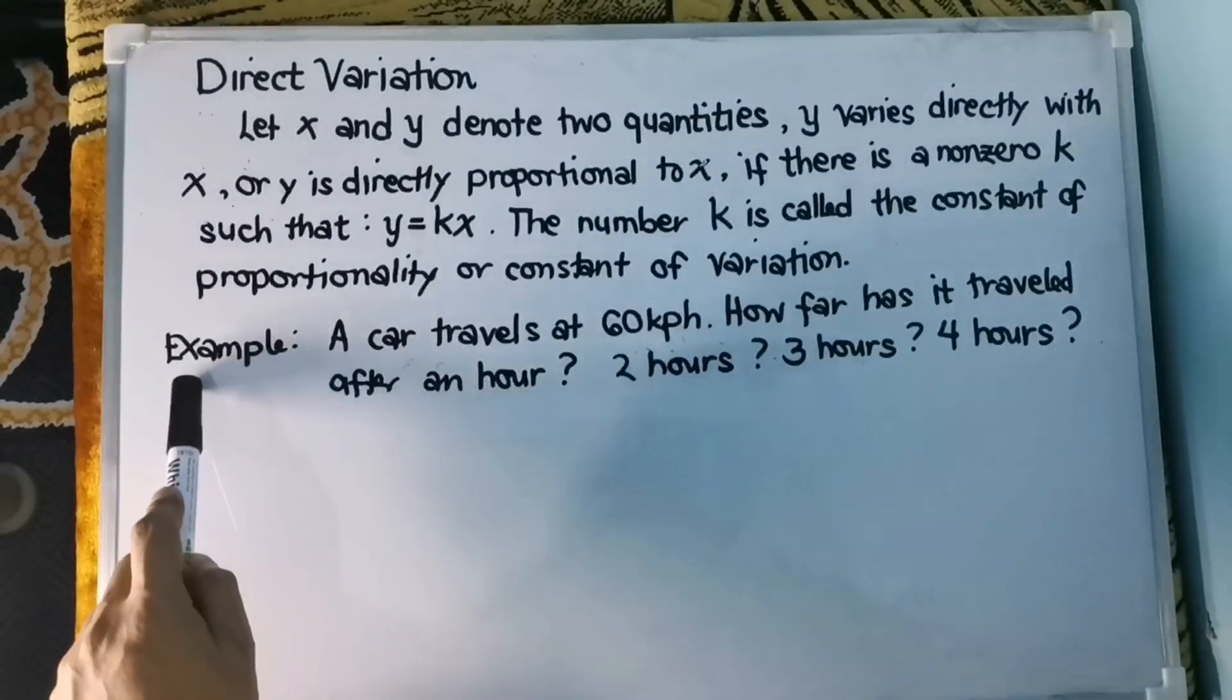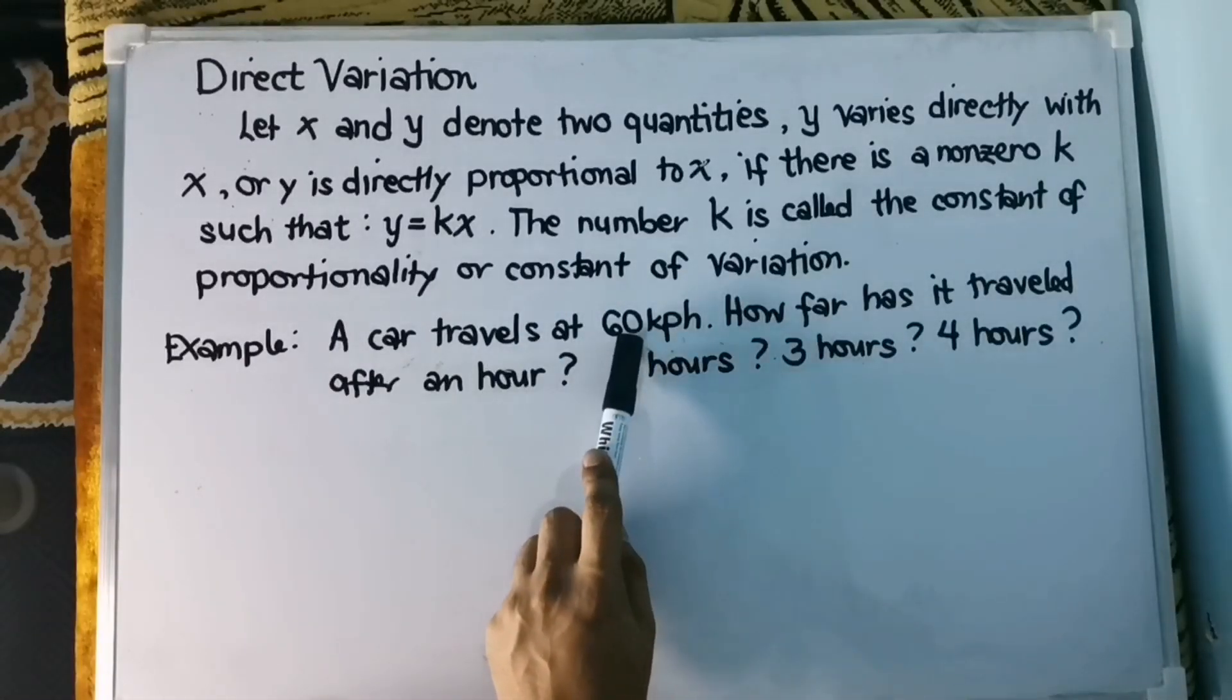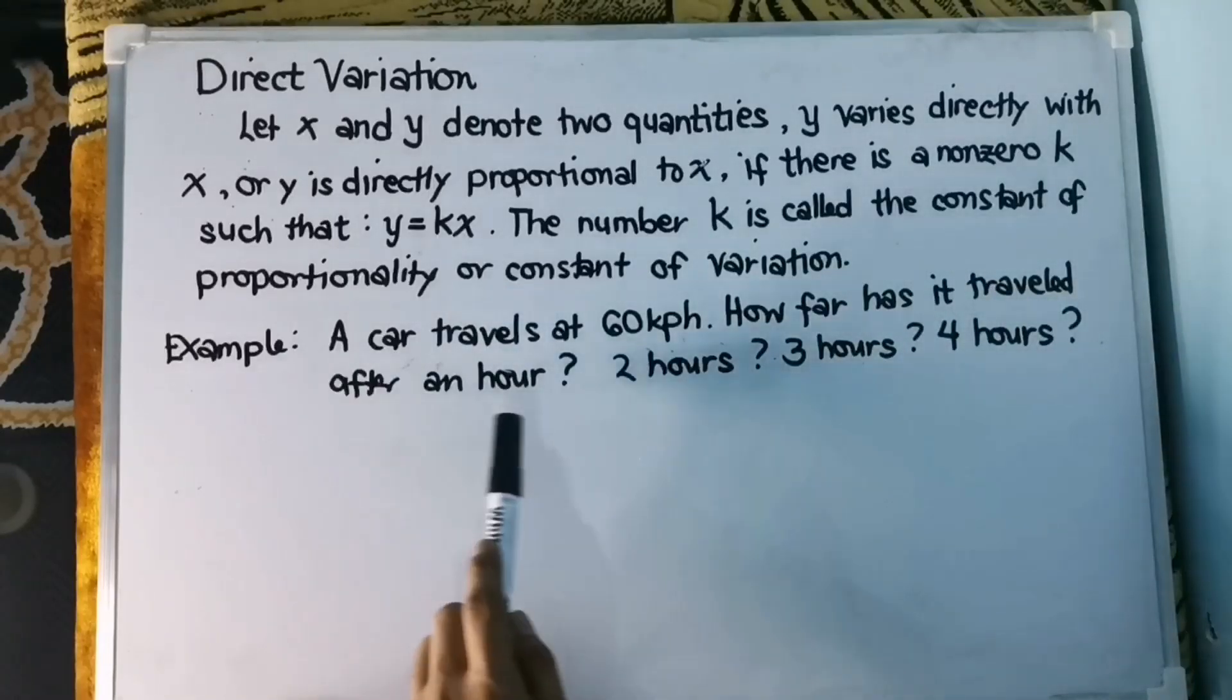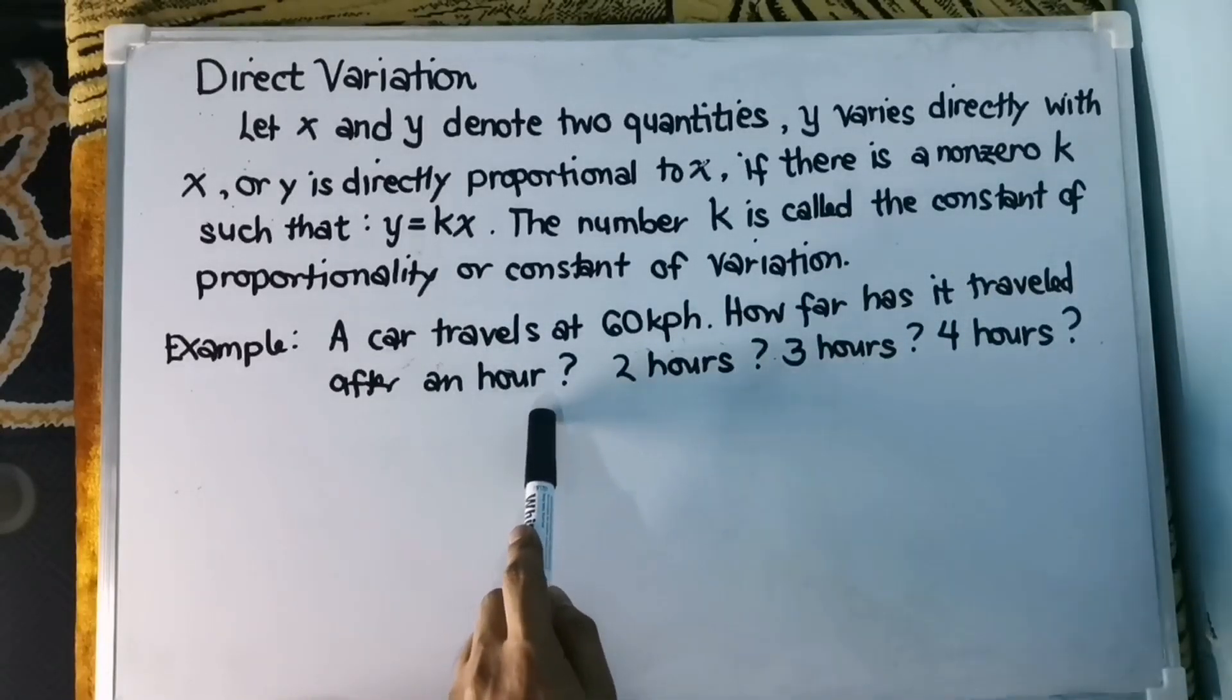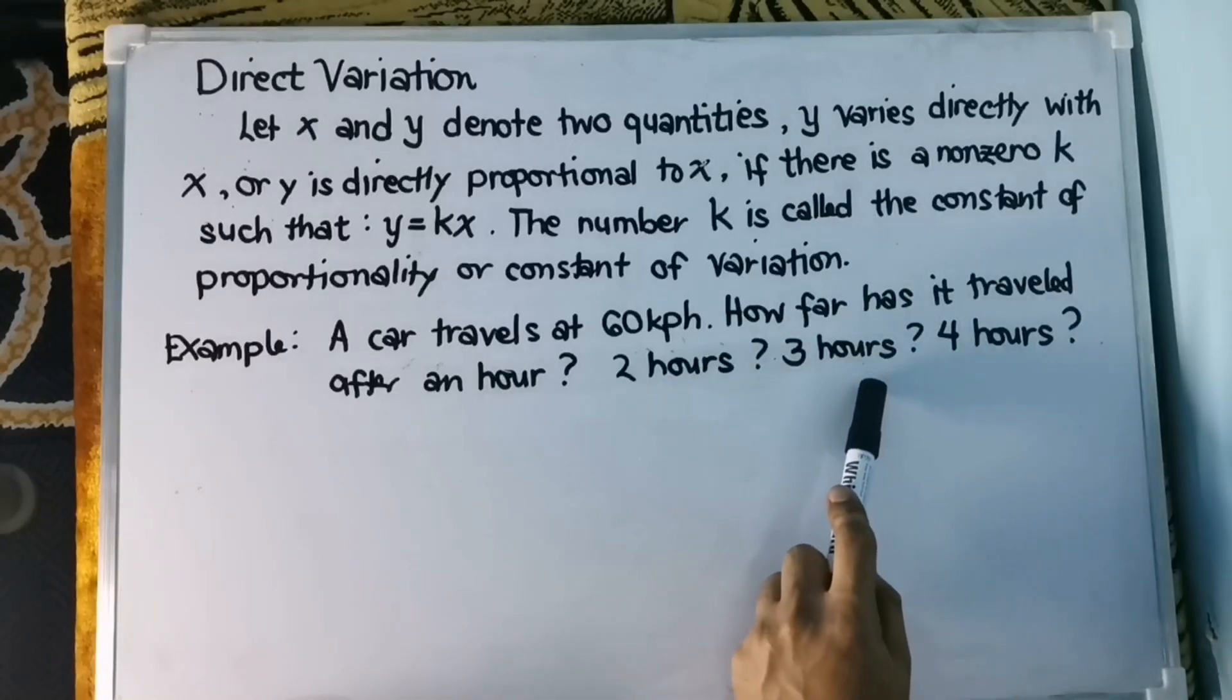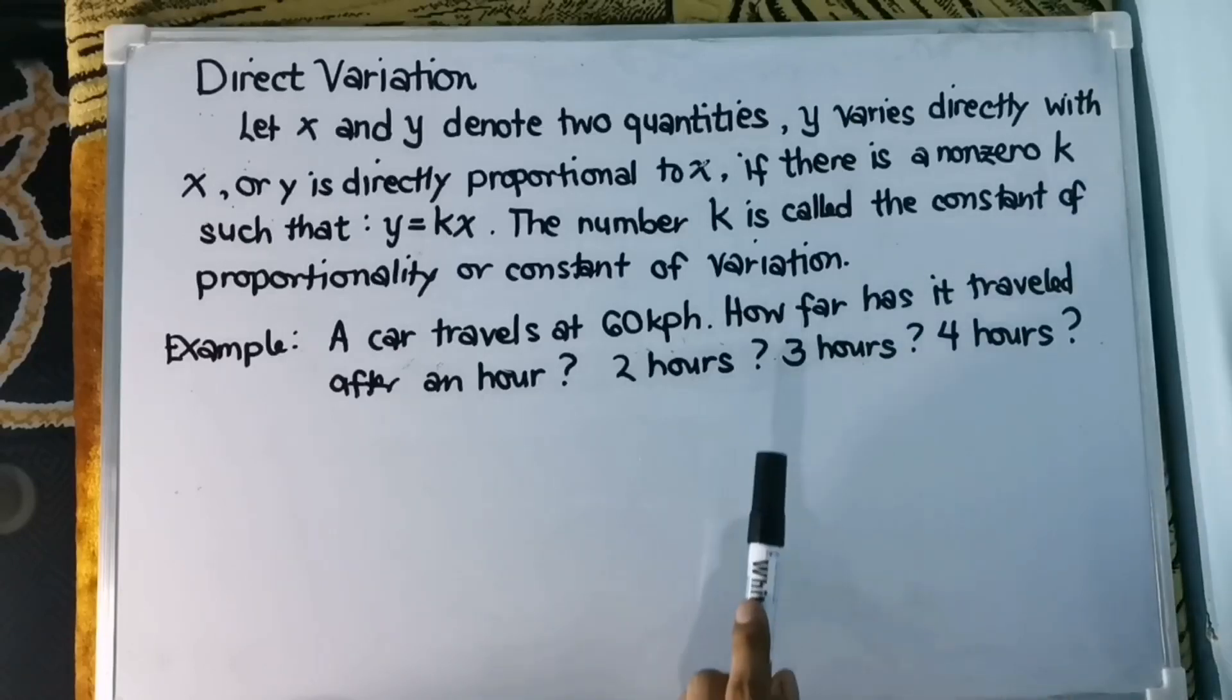Let's consider this example. A car travels at 60 km per hour. How far has it traveled after an hour? How about two hours? Three hours? Four hours? Let us organize the numbers.